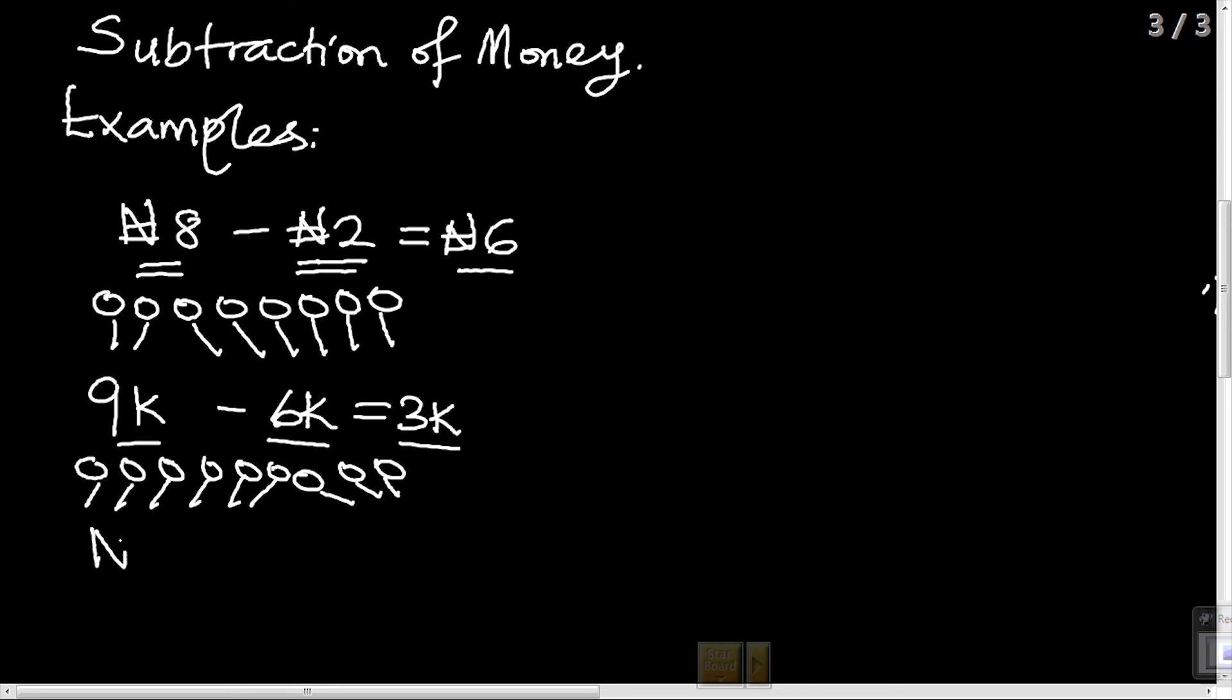Another example: 7 Naira minus 4 Naira. Represent 7 with circles: 1, 2, 3, 4, 5, 6, 7. Subtract 4 Naira from it: 1, 2, 3, 4. Let's count the ones we have left: 1, 2, 3. The answer is 3 Naira.